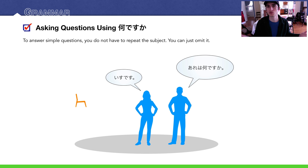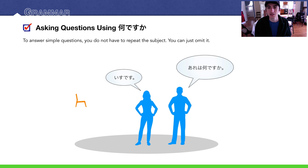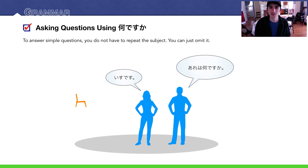Just a quick point: you don't have to repeat the subject when answering simple questions. When you want to answer quickly or simply, you can just say the answer and です. So if he asks あれは何ですか, she can simply say いすです. That's it — simple.